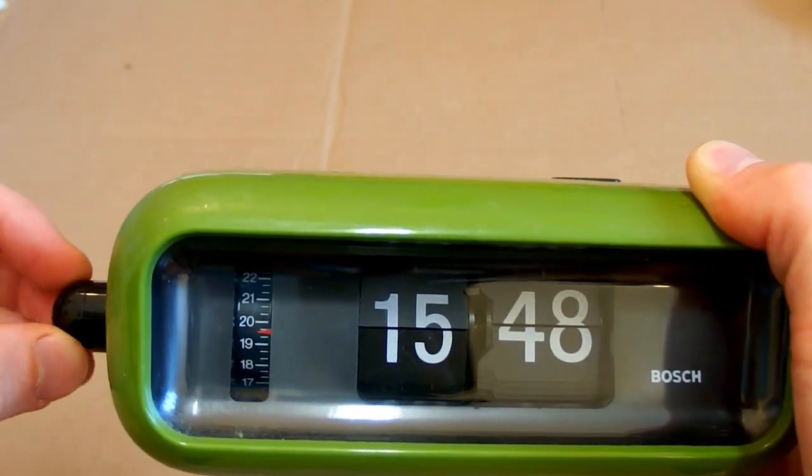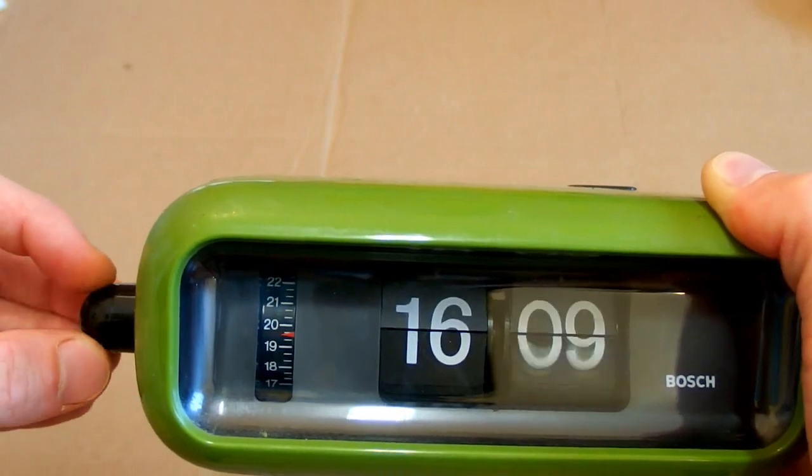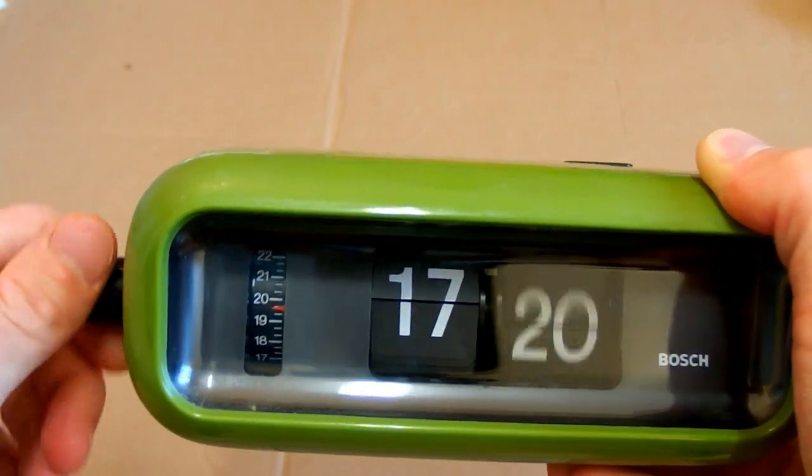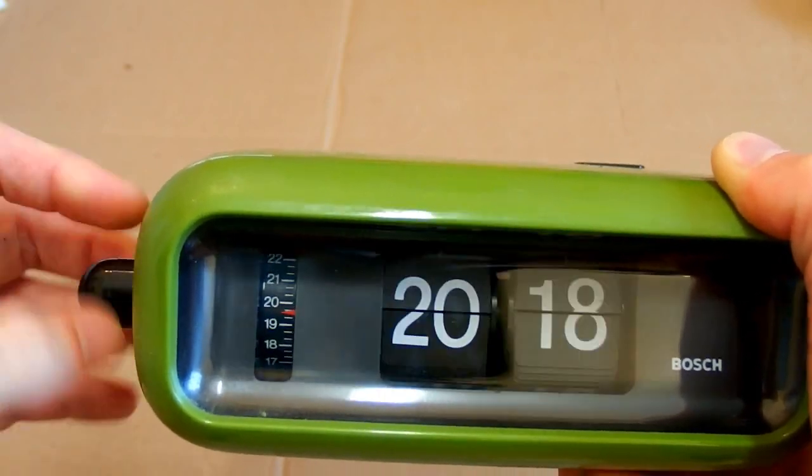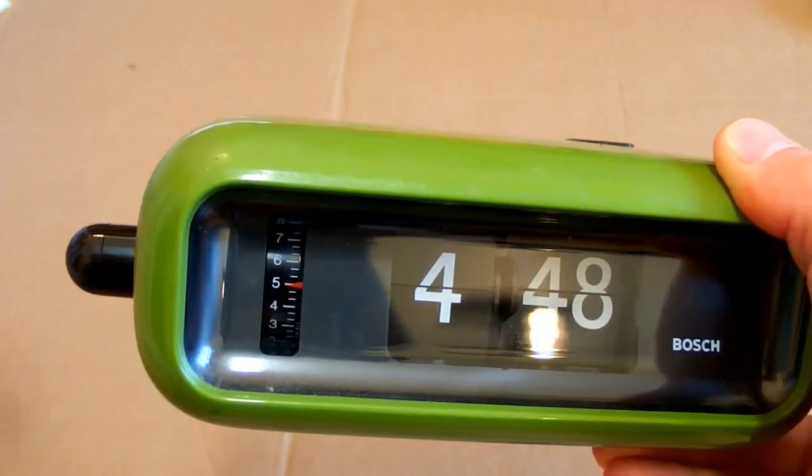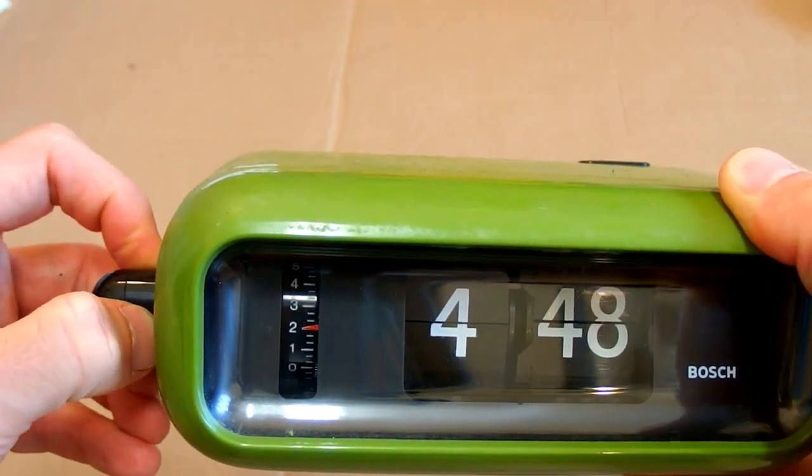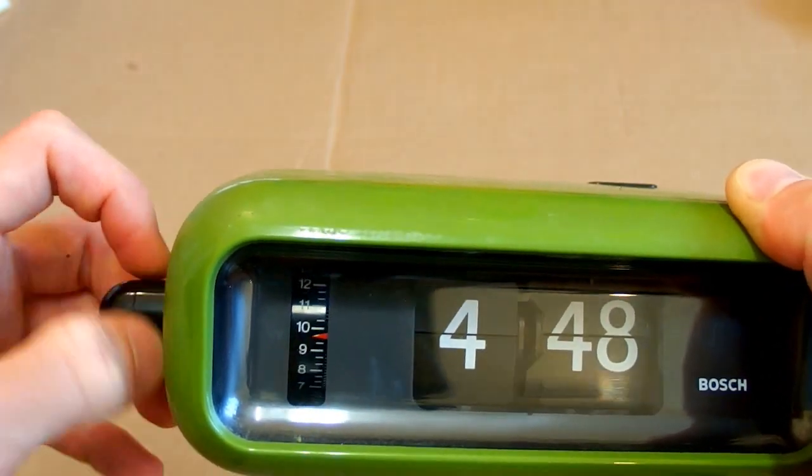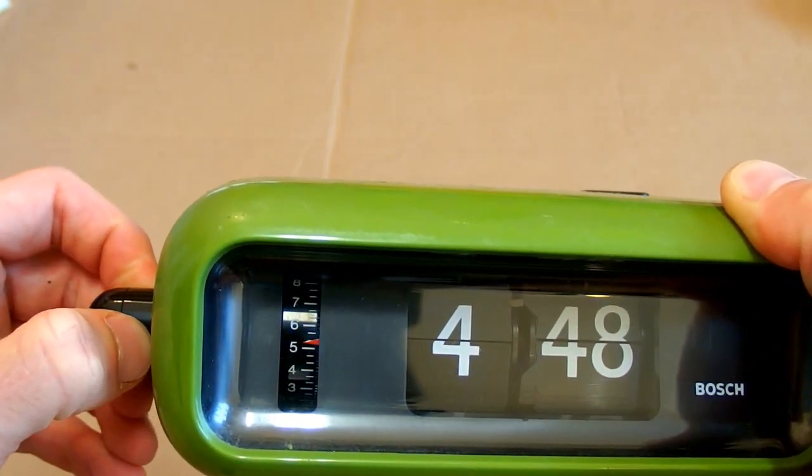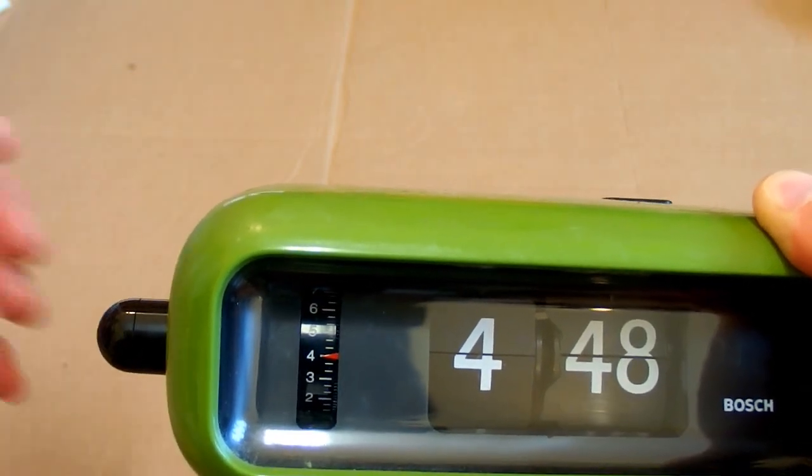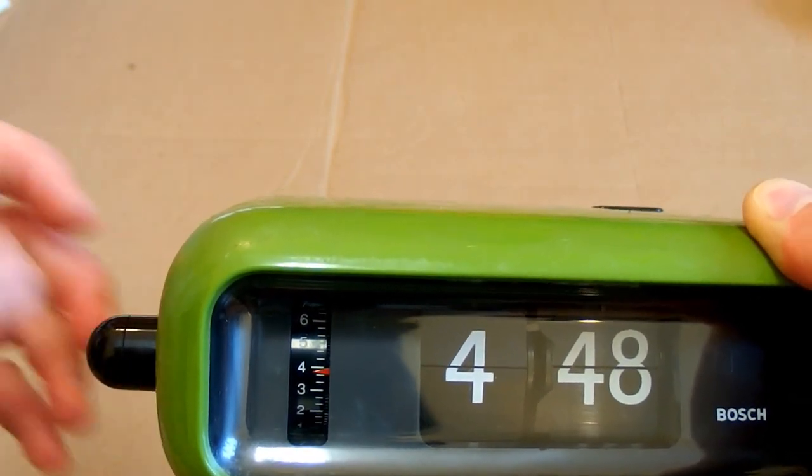The time goes only forward, you can't go back, so it may actually take some time to set it. On the other hand the alarm goes only backwards, not forward. There is a wheel with not much resolution, about 6 clicks per hour, so you set it with 10 minute resolution.